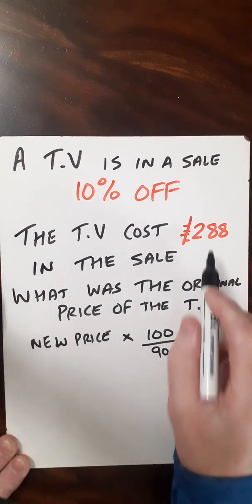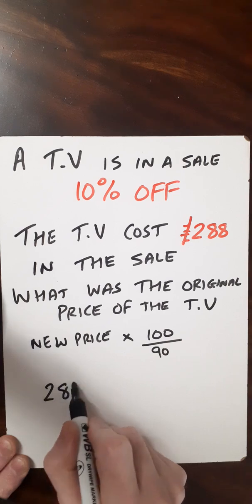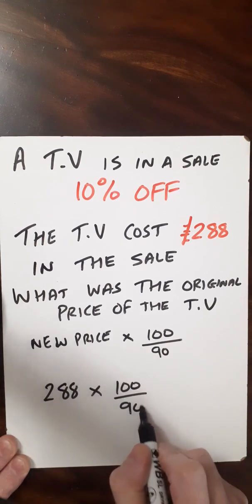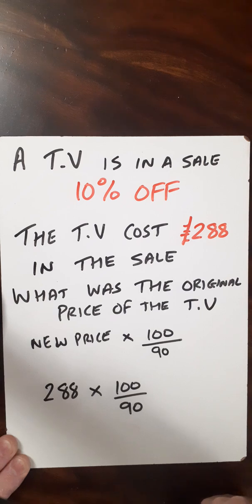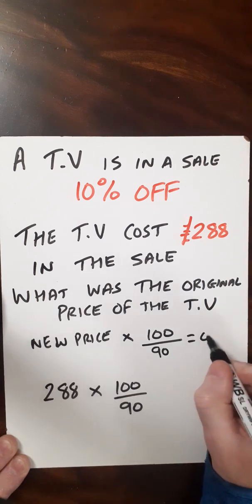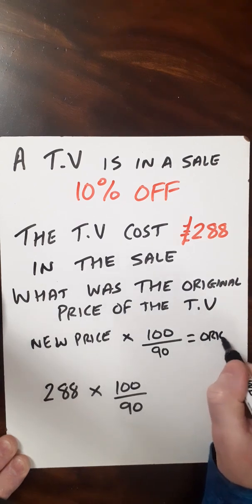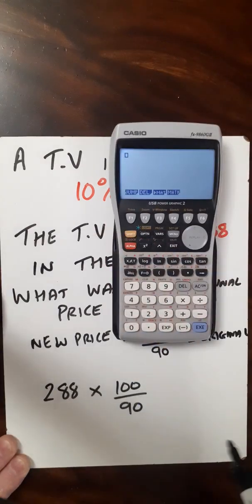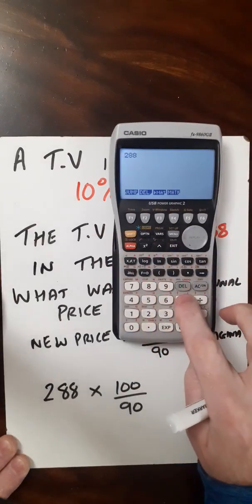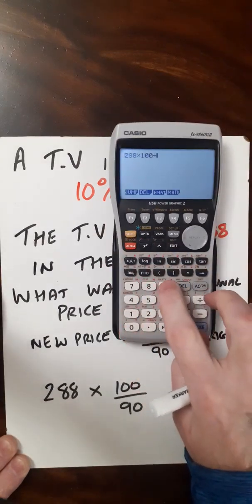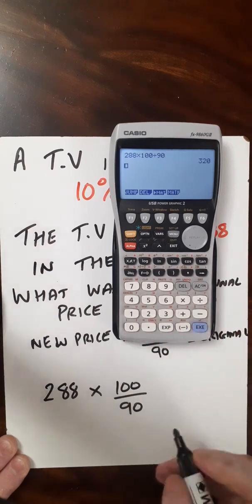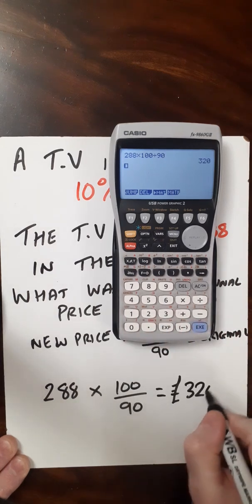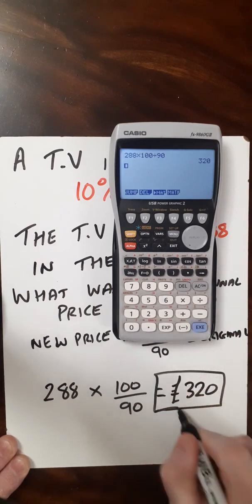The new price is £288, and we multiply that by 100 over 90, which gives us the original price. Let's type it into the calculator: £288 times 100 divided by 90. The original price would be £320, and we are done.